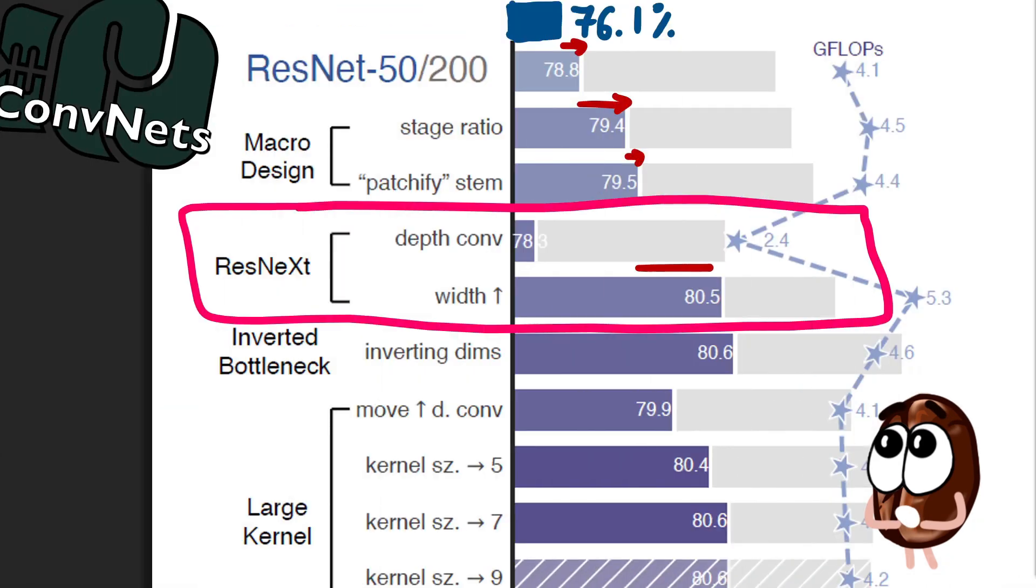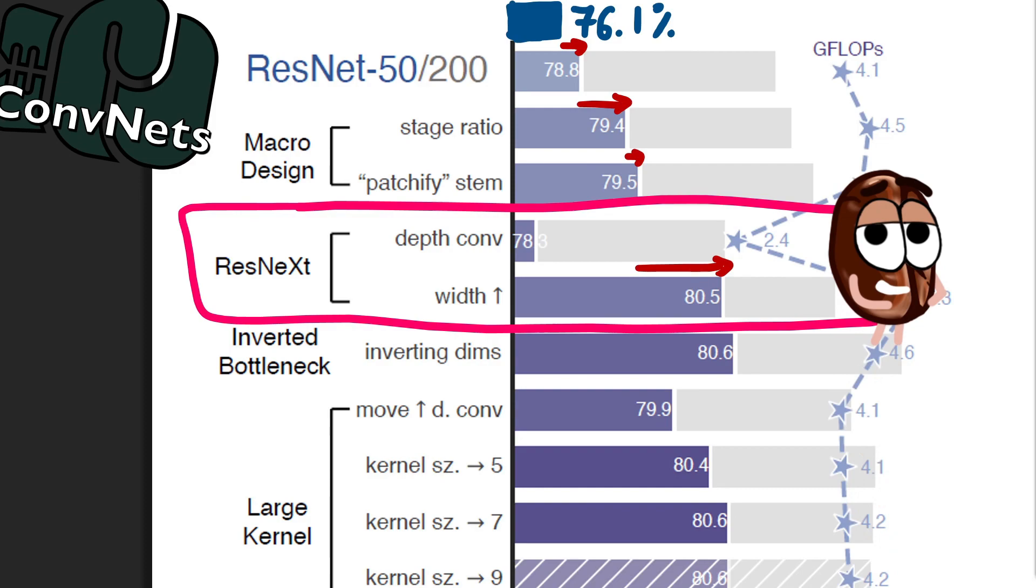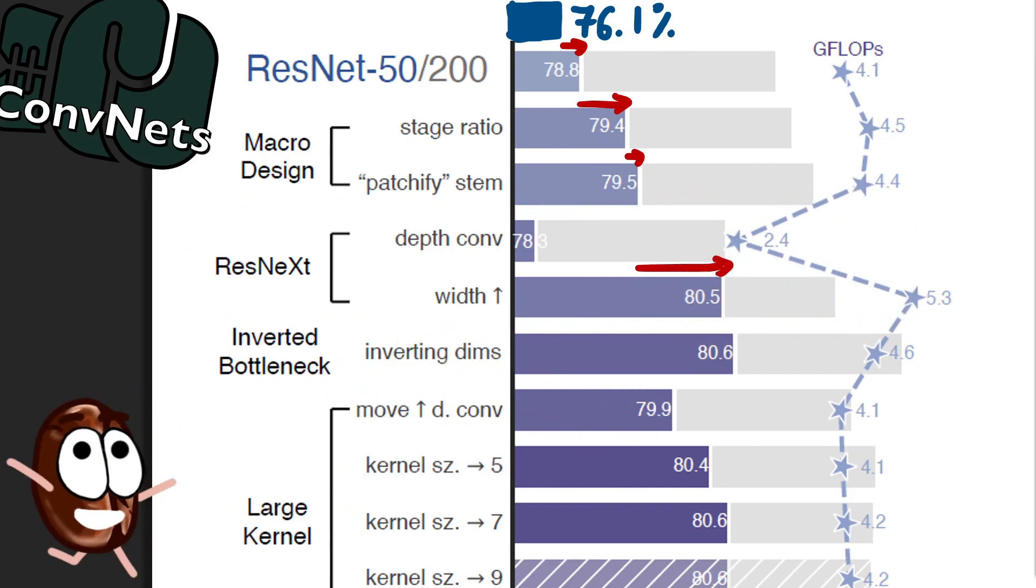And depthwise convolutions, having reduced the number of flops, also reduce the accuracy, but by simultaneously widening the network, the performance is substantially improved. It's time for the fourth stage of the whole improvement process, which is the so-called inverted bottlenecks.